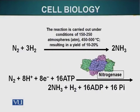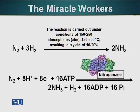Let me give you an example of this: nitrogen fixation. On the top part of the slide, we have a molecule of nitrogen with three molecules of hydrogen resulting in two molecules of ammonia. This is the Haber process, done industrially to produce ammonia.